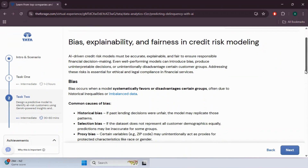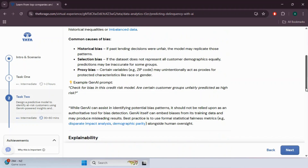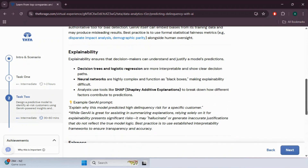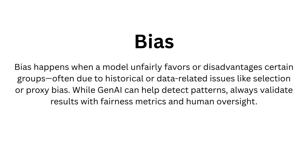AI-driven credit risk models can be powerful but only if used responsibly. We explore three key principles: bias, explainability, and fairness. Bias happens when a model unfairly favors or disadvantages certain groups, often due to historical or data-related issues like selection bias or proxy bias. While Gen AI can help detect patterns, always validate results with fairness metrics and human oversight.